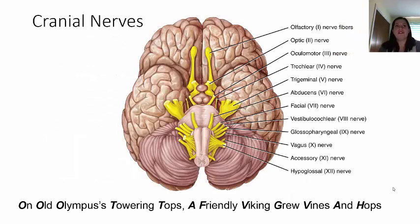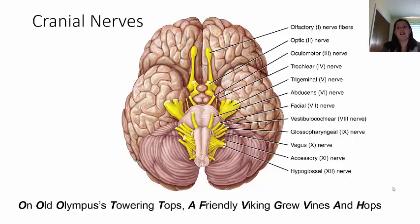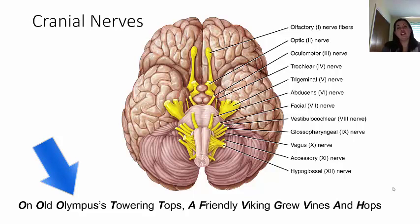Now this next section covers the cranial nerves. You need to know these cranial nerves in order — they are represented with Roman numerals, starting with olfactory as one, optic as two, and so on. You need to study this picture, which will be on your exam. You also need to know what each one does — I may not just ask you where the trigeminal nerve is; I may ask which nerve is for vision. One mnemonic to remember them in order is: 'On Old Olympus's Towering Tops, A Friendly Viking Grew Vines And Hops,' where the first letter of each word corresponds to each cranial nerve.